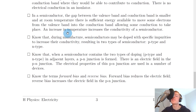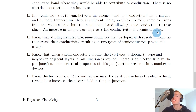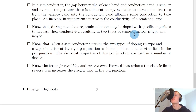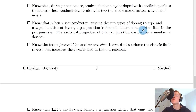For a semiconductor, the gap between the valence band and conduction band is smaller, and at room temperature there is sufficient energy to move some electrons from the valence band into the conduction band, allowing some conduction to take place. An increase in temperature increases the conductivity of a semiconductor, reducing its resistance. During manufacture, semiconductors may be doped with specific impurities to increase conductivity, resulting in either a p-type or n-type semiconductor. Doping with a group 5 element makes an n-type material; doping with a group 3 element like boron makes a p-type material. When a semiconductor contains both p-type and n-type layers in adjacent regions, a p-n junction is formed, and there is an electric field in the p-n junction. The electrical properties of this junction are used in a number of devices.